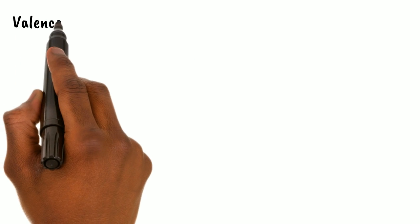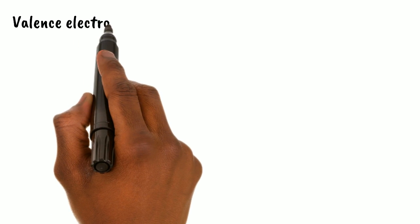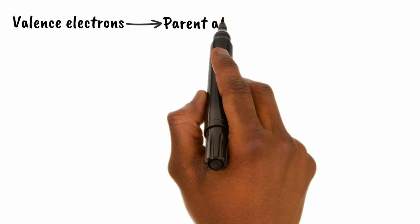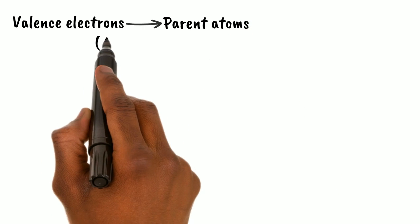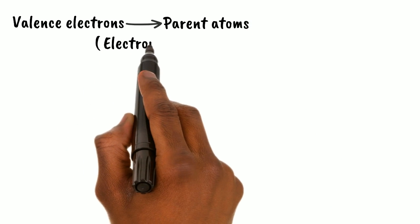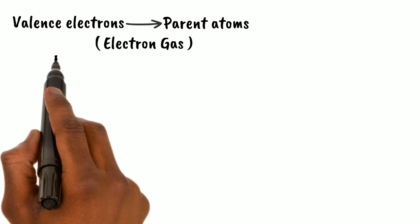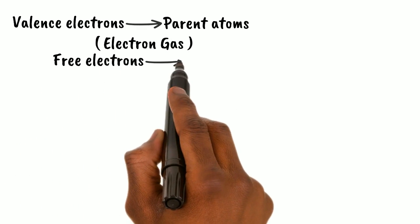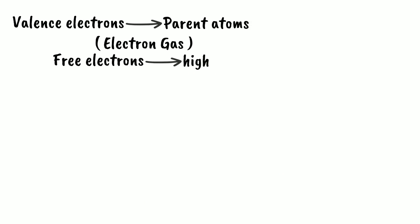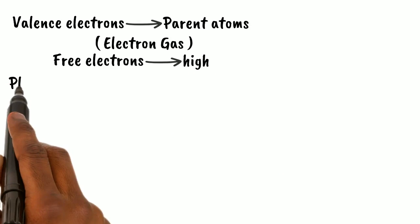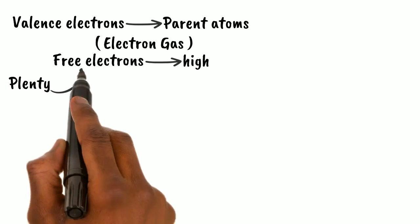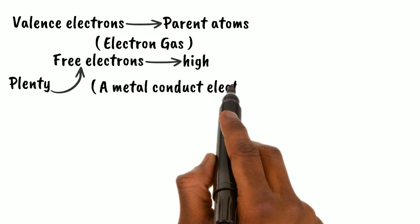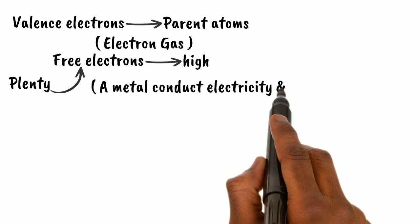The valence electrons released from the parent atoms form the electron gas of free electrons. The mobility of free electrons is high. Because of plenty of these free electrons, a metal conducts electricity and heat very easily.